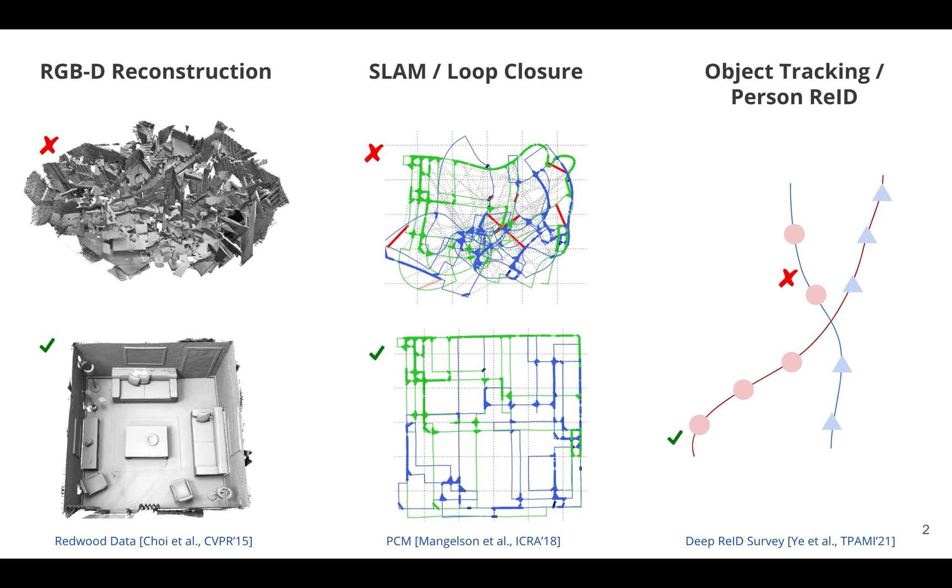Shown here are a few examples that use data association in their pipelines. Take for example, RGBD reconstruction. The goal here is to take multiple images, extract features in each of those images, and then match those features across images. Once those features are matched, we can use that information to stitch together these different RGBD frames and end up with some reconstruction as shown here in the bottom left.